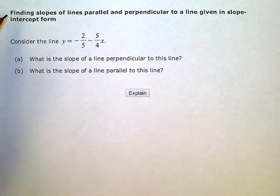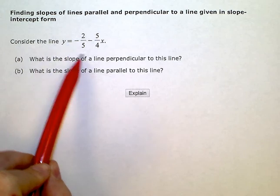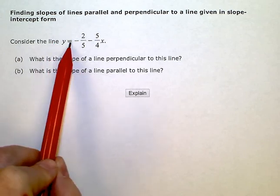Finding slopes of lines parallel and perpendicular to a line given in slope-intercept form. So my problem here says consider the line, and it's giving me an equation. It's in y equals or slope-intercept form.